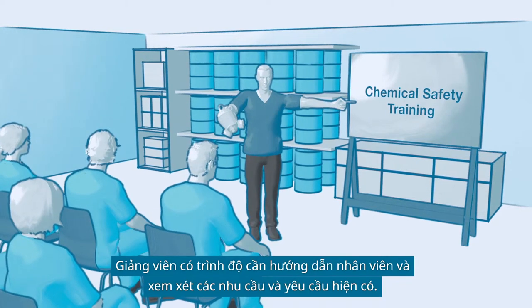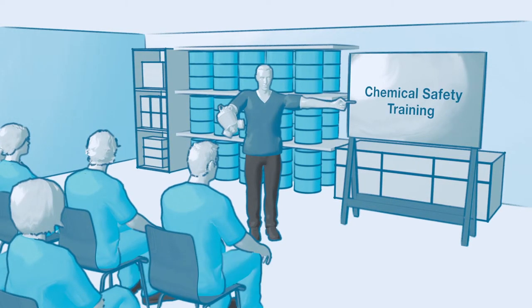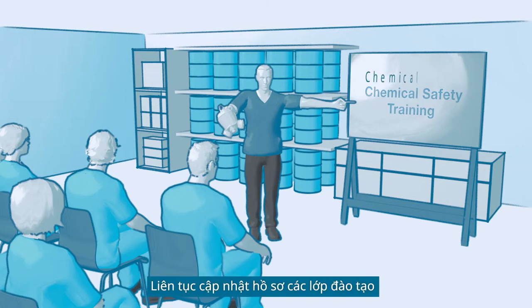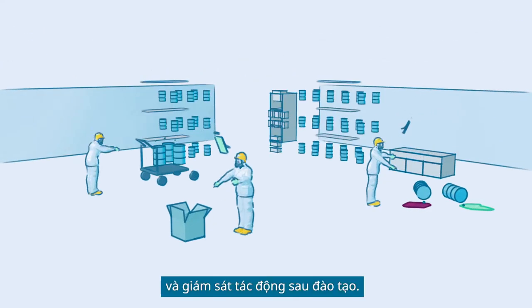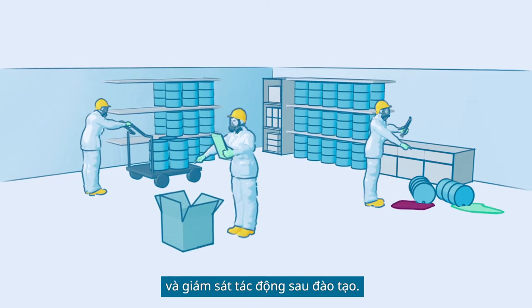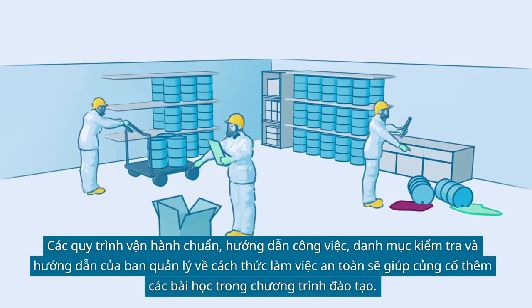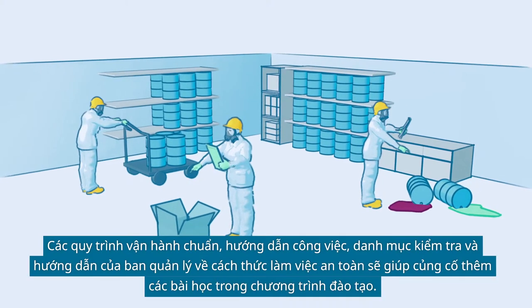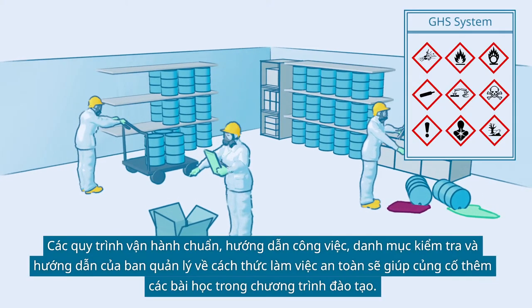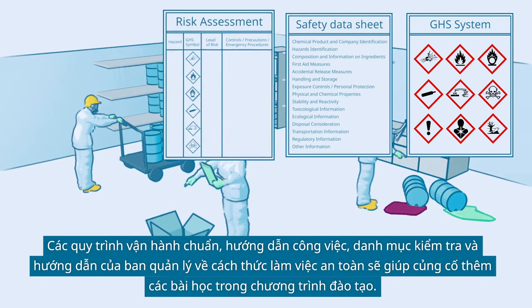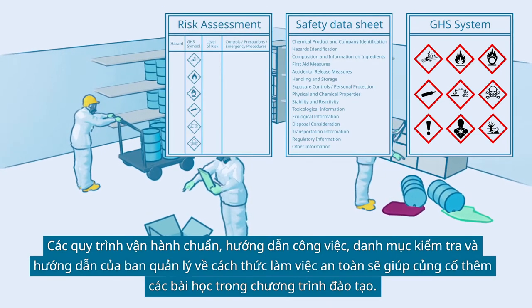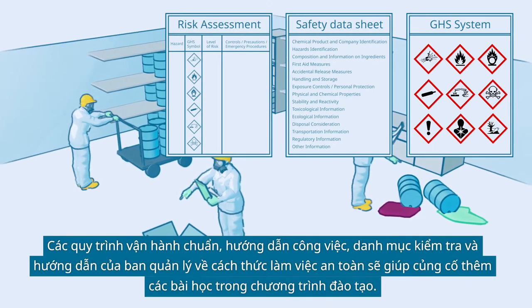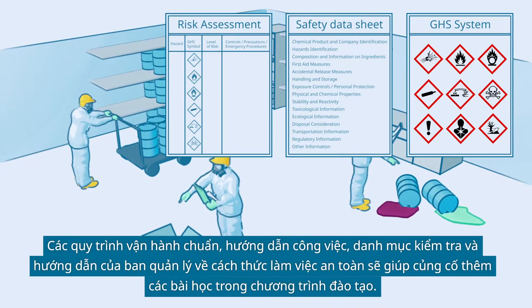A qualified trainer should instruct the employees and take current needs and requirements into consideration. Keep up-to-date records of the training classes and monitor the training impact. Standard operating procedures, work instructions, checklists, and guidance by the Management on Safe Work Practices will help to reinforce the training lessons.